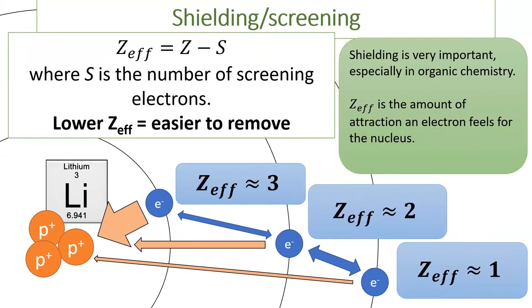We say that the inner electrons shield or screen the charge from the nucleus. The effective nuclear charge felt by an electron can be approximated by subtracting the number of screening electrons from the atomic number Z. Effective nuclear charge dictates how hard it is to remove an electron and is very important for further understanding of chemistry.